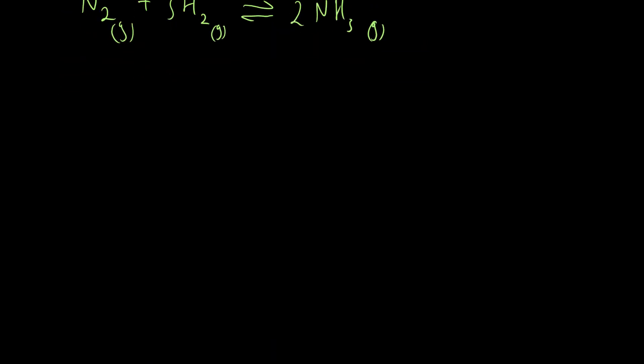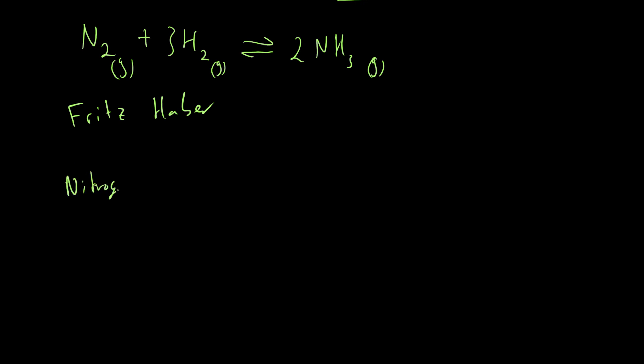This process is called the Haber Process because it was invented by a man called Fritz Haber, and it's still the process used today to obtain ammonia. In this process we use nitrogen and hydrogen. Nitrogen is the main component of air - it makes up about 78% - so we just get that from the air. Hydrogen we get mainly from natural gas. That natural gas also contains things such as methane. Both of them need to be purified because we need only nitrogen and hydrogen in this process.